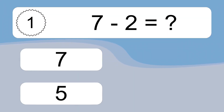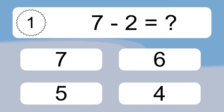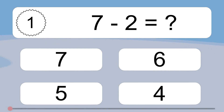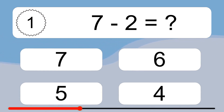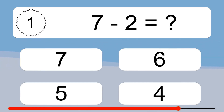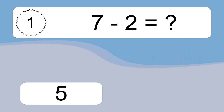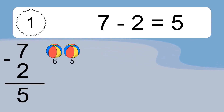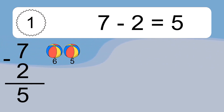7 minus 2 equals what? 7 minus 2 equals 5. Let's count it. 6, 5.